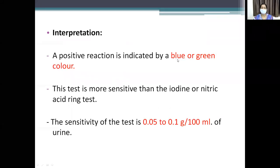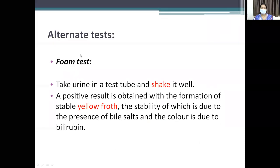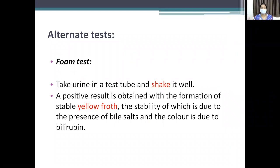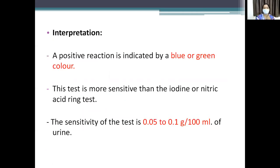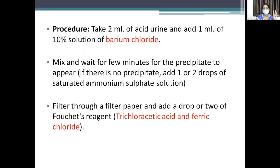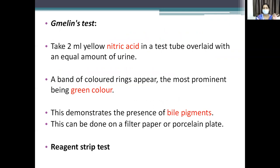The alternate test is the foam test: take urine in a test tube, shake it, and observe yellow foam — the yellow foam is due to the presence of bile salts and the color is due to bilirubin. Then there is Melin's test, which is a nitric acid test: take 2 ml of urine, a green color appears, indicating the presence of bile pigments. This can be done on filter paper or a porcelain blade. The reagent strip test is also available. So for bile pigments, the tests are: Fouchet's, foam test, Melin's test, and reagent strip test.